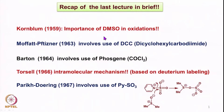We will have a brief recap of the last lecture where we discussed sulfur-based oxidations, starting with Kornblum oxidation, where we saw the importance of DMSO in oxidation. We discussed the activation of halides or tosylate with DMSO, eventually leading to the oxidation and forming carbonyl compounds, along with some mechanism.